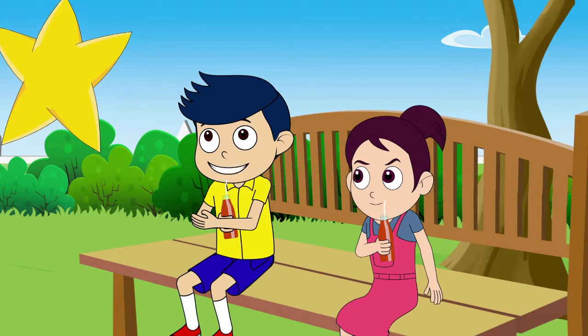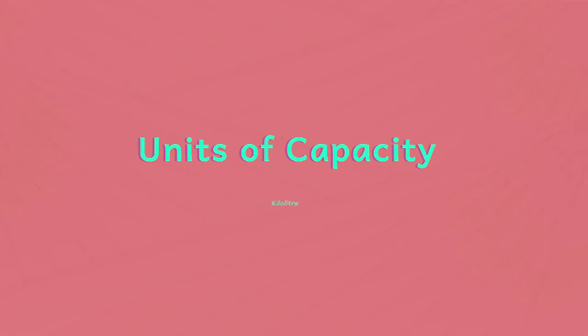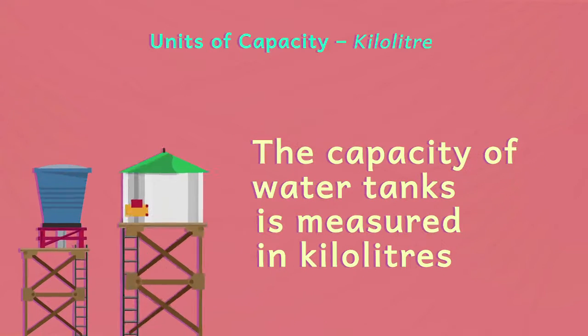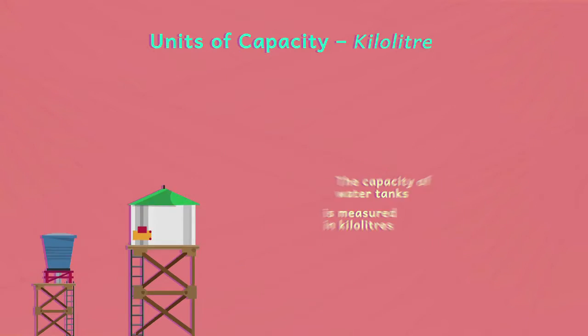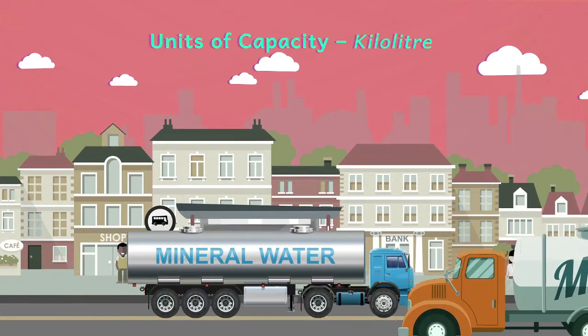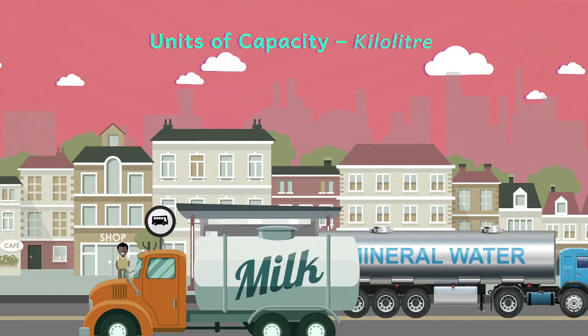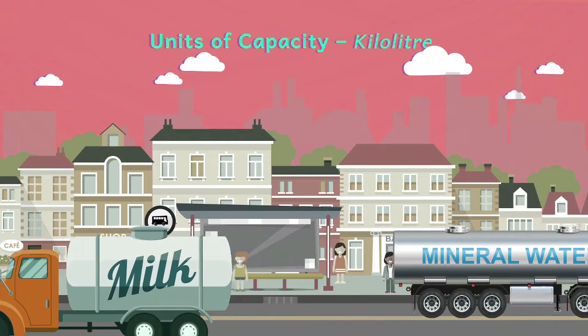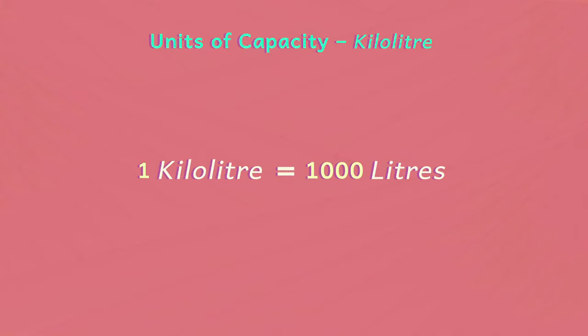What about the really big containers? We have a larger unit for those containers. A much larger unit to measure capacity is kilolitre. The capacity of water tanks is measured in kilolitres. Water or milk is transported using water or milk tankers which have very large capacities. Thus, to measure very large capacities, we use kilolitres. One kilolitre equals thousand litres.